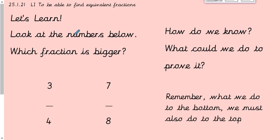Looking at this, I'm thinking the eight must make it bigger than the four. However, because they're not the same fraction we can't compare them. You can only compare fractions when they have the same denominator. So we'd need to make these the same denominator — we could divide this by two to get four, but we can't divide seven by two without getting a decimal, and we don't want a decimal in a fraction.